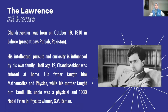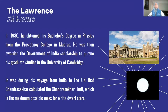And his uncle actually was a physicist. His uncle was actually the 1930 Nobel Prize in Physics winner, C.V. Raman. So truly, they say that sometimes one of your biggest inspirations come from the people closest to you. And in Chandrasekhar's case, it comes from his own family. In 1930, he obtained his bachelor's degree in physics from the Presidency College in Madras.